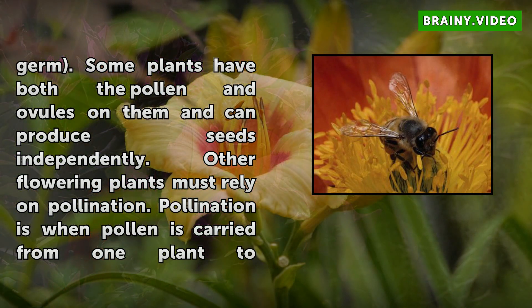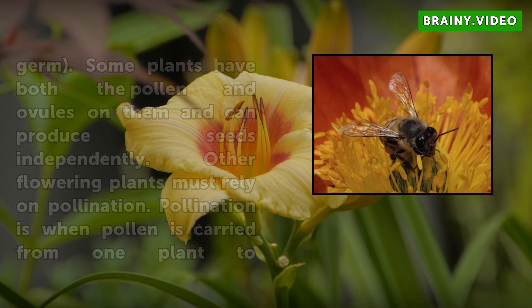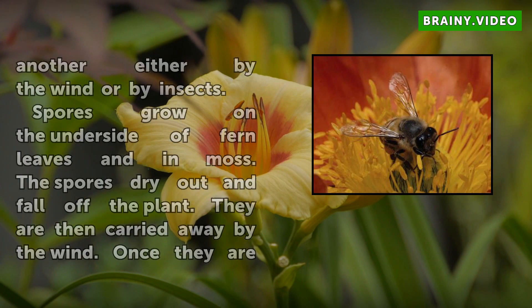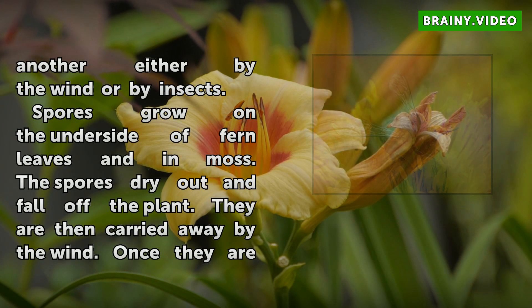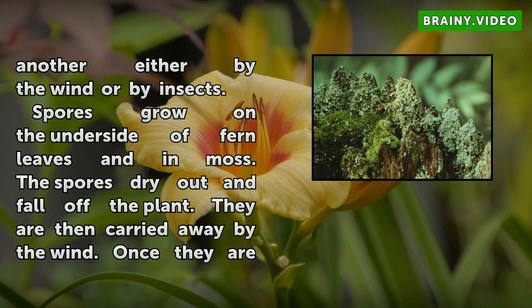Spores grow on the underside of fern leaves and in moss. The spores dry out and fall off the plant, and are then carried away by the wind. Once they are exposed to a moist environment, the spores can begin growing into a new plant.